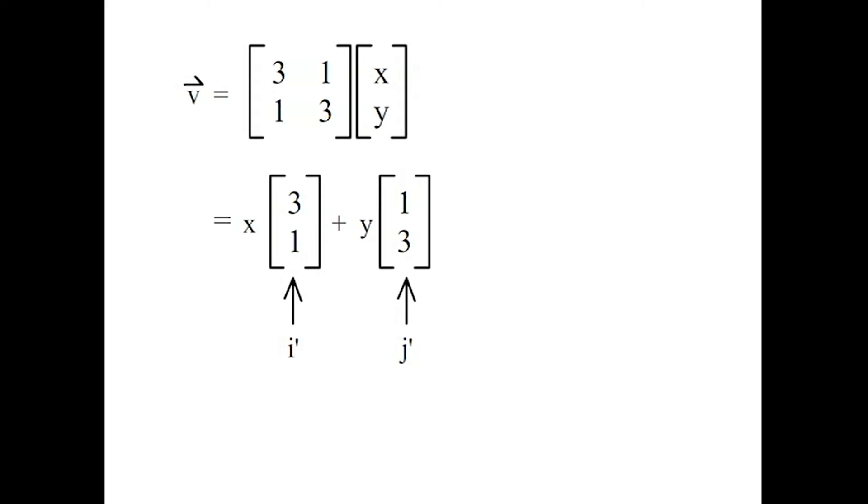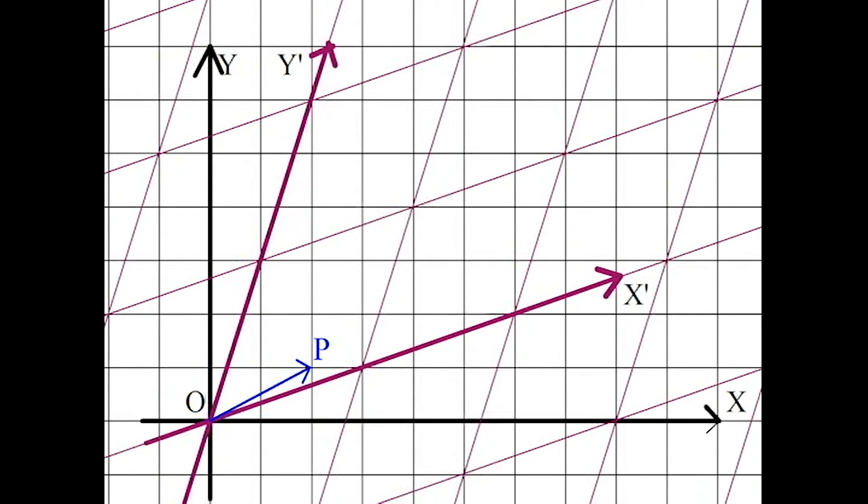Instead of i-j, it is now i-prime and j-prime. Here's a more visual way of understanding this. Going back to our previous example, the vector p, which is [2,1], is still [2,1], but on the new transformed plane.